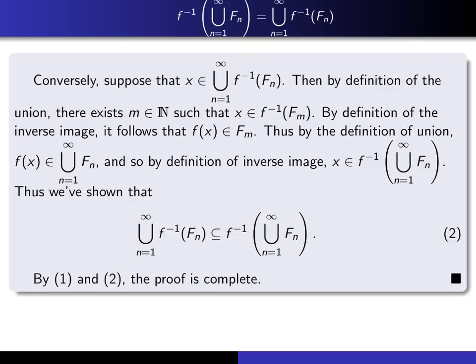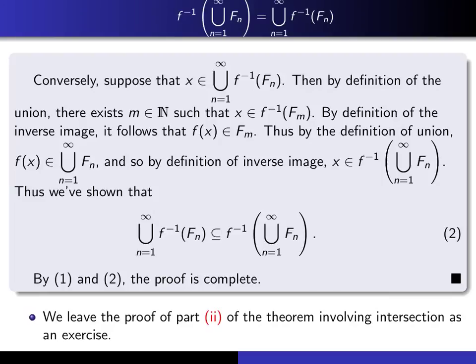So this is a subset of this, and we've done everything — that completes the proof. I'm going to leave the proof of part two of the theorem to you as an exercise. The argument is quite similar. The big difference between union and intersection is just the choice of quantifier: to say x is in an intersection, instead of saying there exists an m such that it's in it, it's for every m. If you just replace your 'there exists' by 'for all', the proof works.